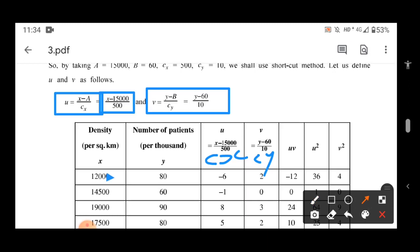Let me find u. 12,000 minus 15,000, that's -3,000 divided by 500, which gives -6. 14,500 minus 15,000 divided by 500, which is -1. Clear? So you continue like this and get all u values.